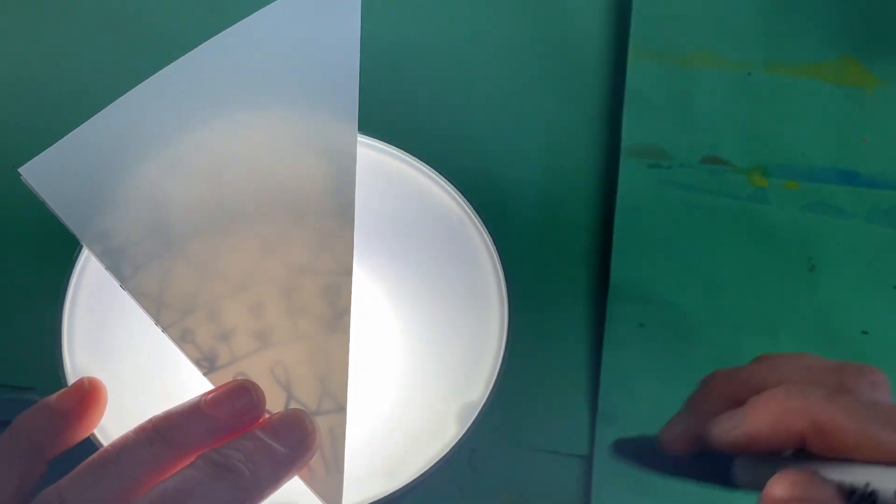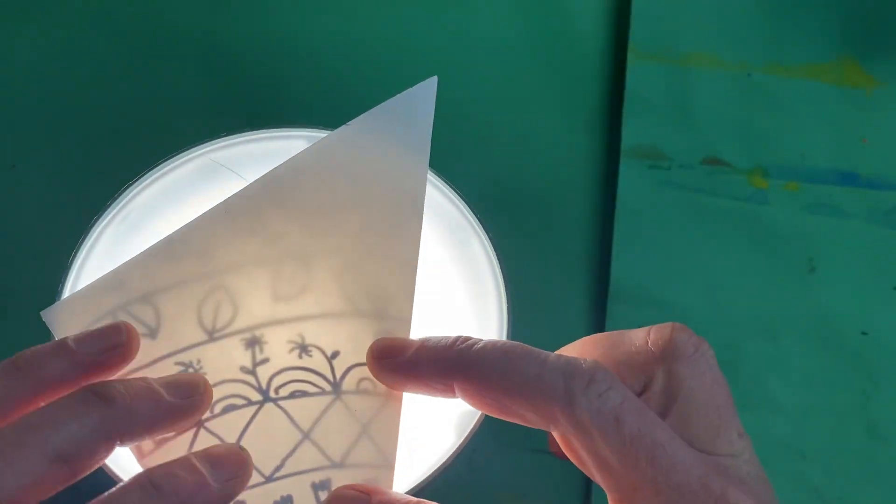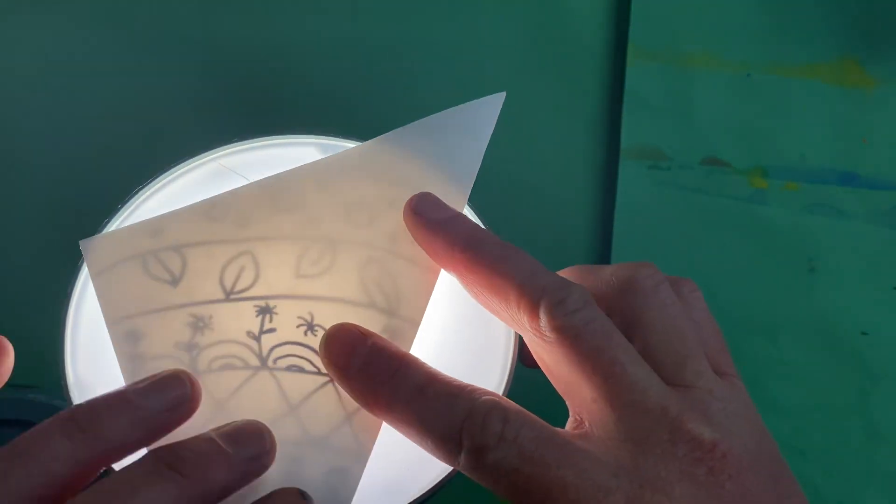If you happen to get any permanent marker on the window, just let me know. I'll give you some rubbing alcohol on a tissue and you can rub it right off.